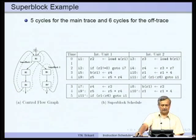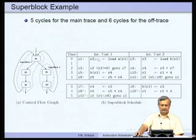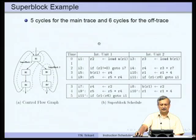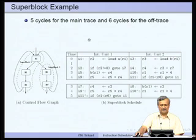After tail duplication, we schedule each trace independently, moving instructions freely. The main trace now requires only 5 cycles — reduced from 6 under trace scheduling and 9 under basic block scheduling. The off-trace requires 6 cycles. Superblock scheduling gives one more cycle improvement for the main trace, but at the cost of code size increase since one basic block has been replicated.